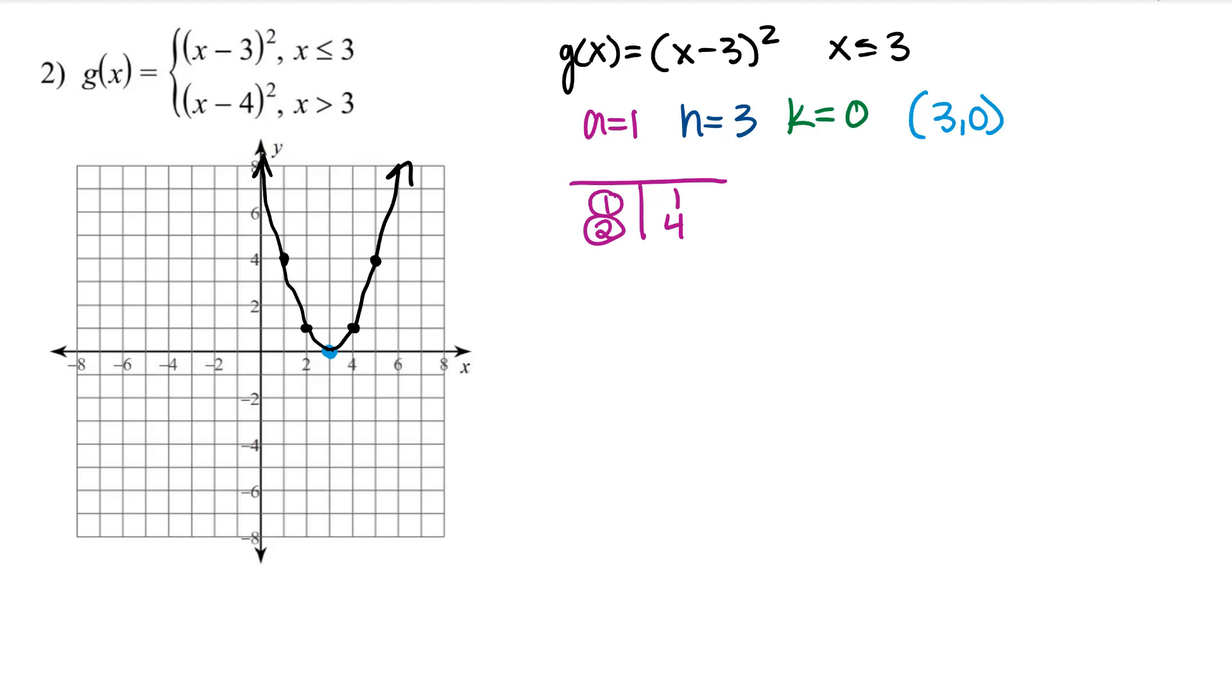So I've graphed the first piece, but then I remember there's a domain restriction that this parabola is only existent when the x's are less than or equal to 3. So everything to the right of 3 on this parabola I need to erase.